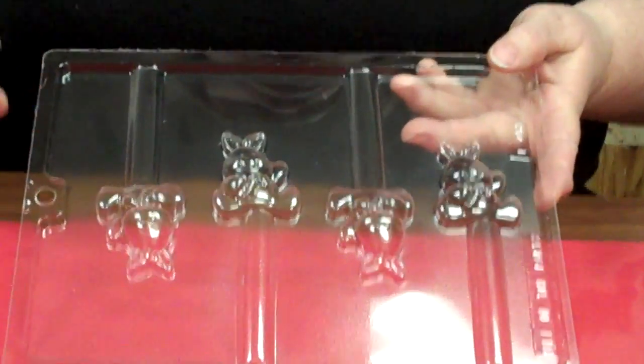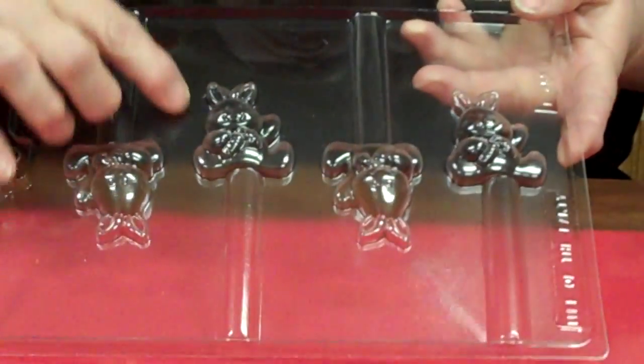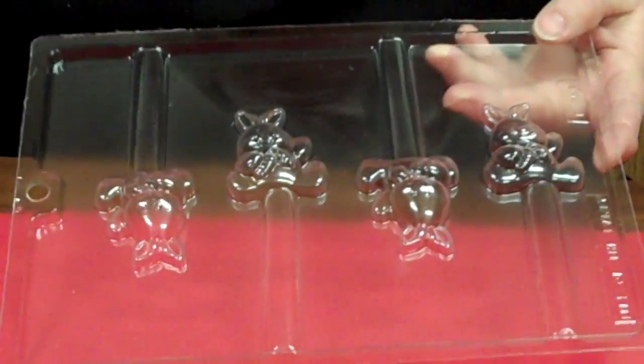I have a couple of Easter ones here. This one happens to be a little bunny. He's holding a cute little carrot. And this one over here is a carrot mold. I love this mold. It's so cute.